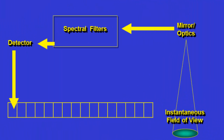This is a cartoon of how the Landsat sensors work with a scanning mirror. We have a scanning mirror, an instantaneous field of view — essentially a pixel, which is actually an oblong instantaneous field of view. From the scanning mirror, light goes to spectral filters and then to detectors, which produce the pixel value for each band.